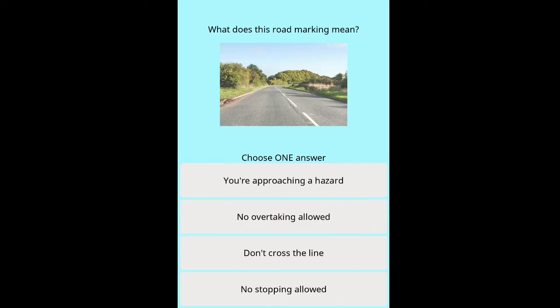Question: What does this road marking mean? Options: you're approaching a hazard, no overtaking allowed, don't cross the line, no stopping allowed.